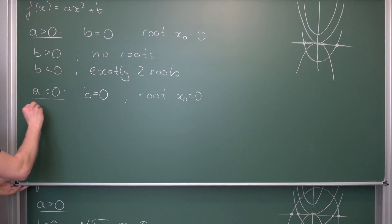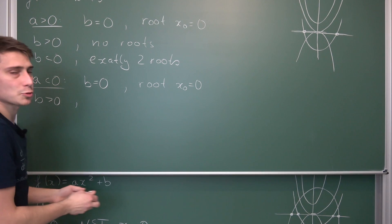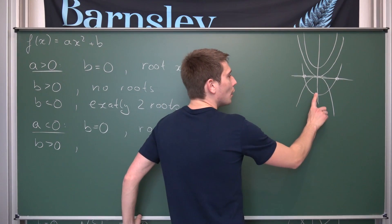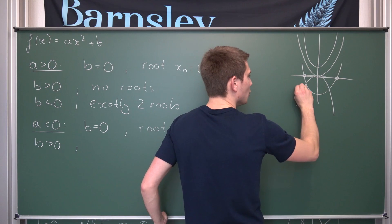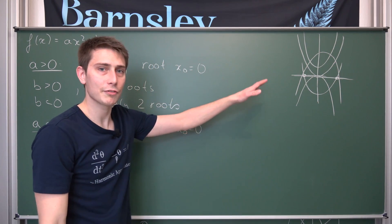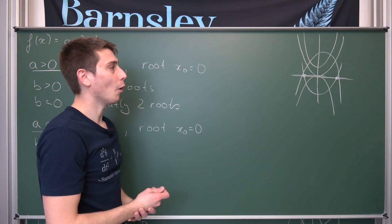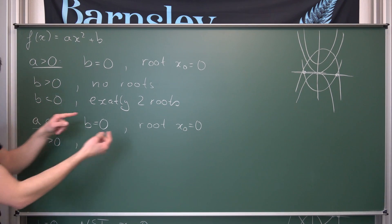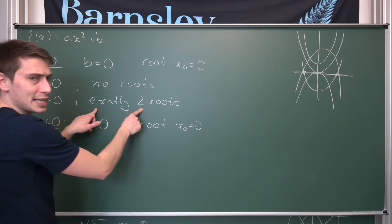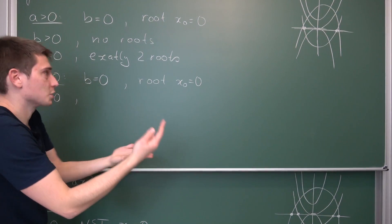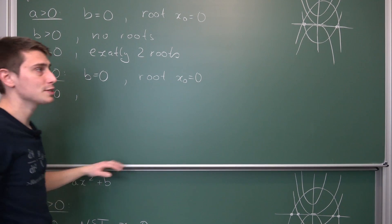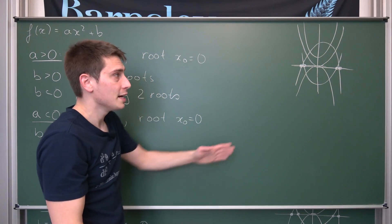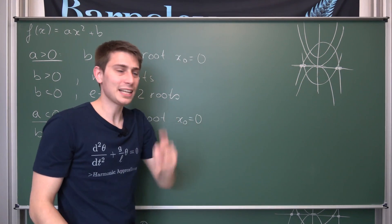What about b greater than zero when a < 0? You might think at first we won't have any roots, but think further. We shift our parabola in the positive y direction, and it opens downward. This time it's completely the other way around from before. For a < 0 and b > 0 — inverse signs — we get exactly two roots yet again, lying the same distance apart from the origin. They are reflections of one another, so we have exactly two roots.